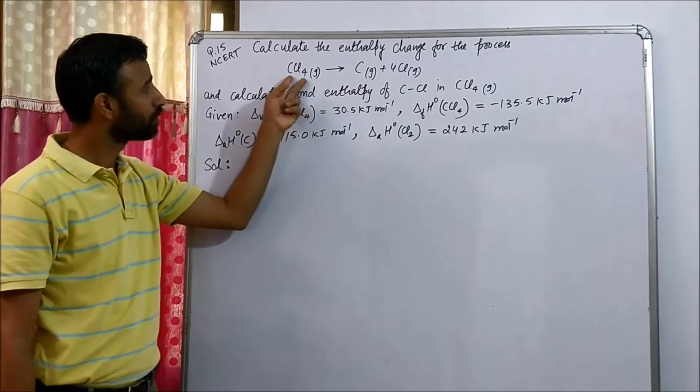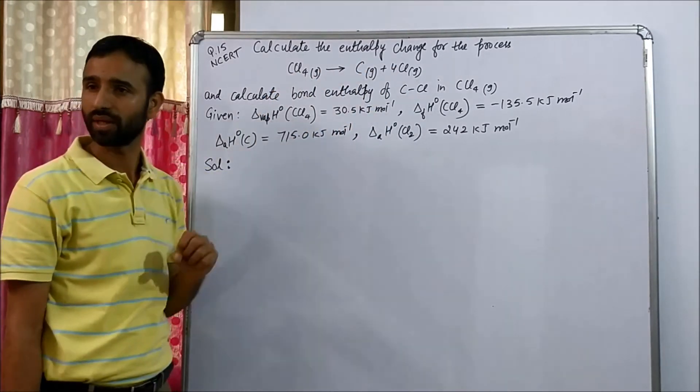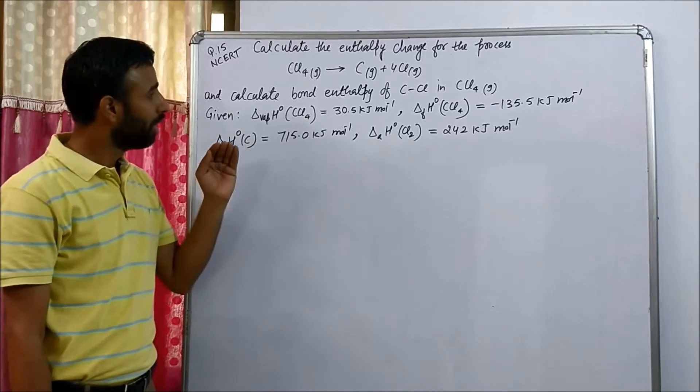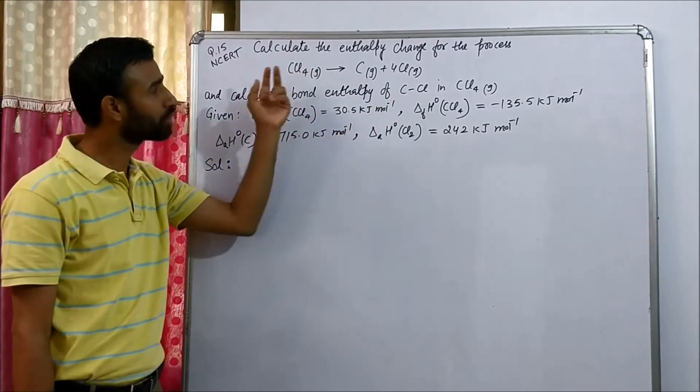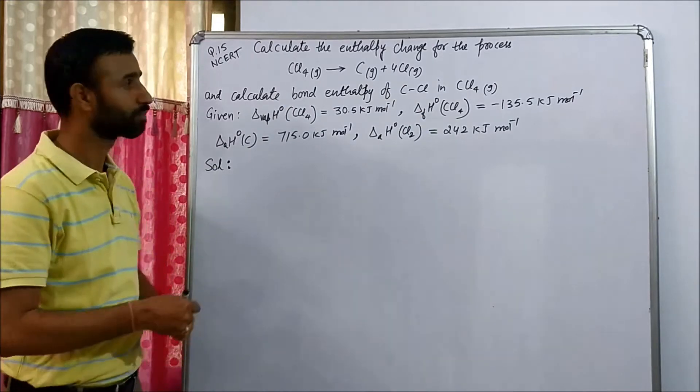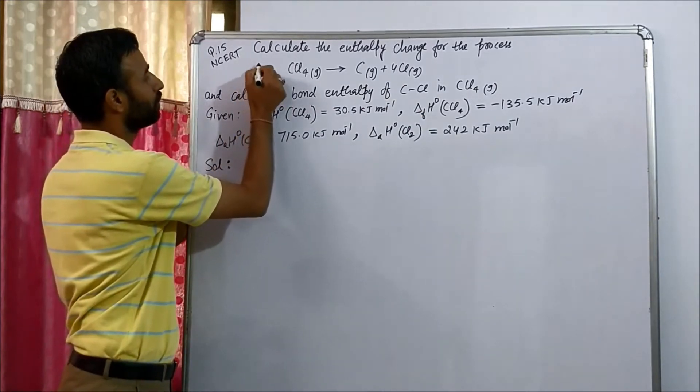Now if we compare this definition with CCl4 gas to C gas plus 4 Cl gas, here again CCl4 gas is converted into its gaseous atoms. Now it is for one mole. Now how many bonds are broken? In CCl4, it is like this.